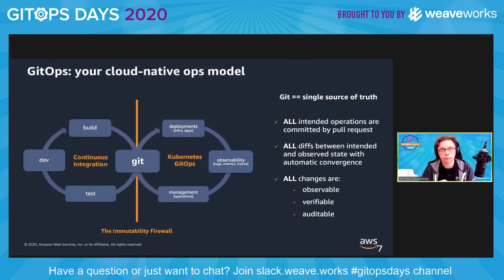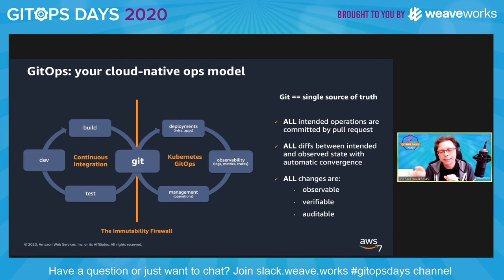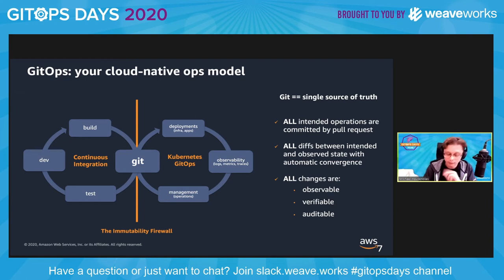I bet you've seen this before. GitOps gives you a cloud native operations model. The Git repo — matter of taste whether that's one, two, or multiple — is the single source of truth for all state, and you have agents doing the reconciliation. Most importantly, let's focus on these three points: all changes, whether infrastructure level — like ramping up a new Kubernetes cluster — or application level — like deploying a new microservice — are observable, verifiable, and auditable. At any point in time I should be able to say this container in this version on this node was approved due to this change made by this developer and approved by this person before going to production.